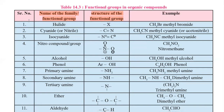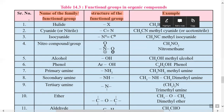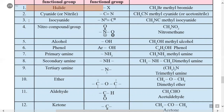The first type is halide. The functional group is dash X, where X is the halogen — it may be chlorine, bromine, iodine, or fluorine. Chlorine is called chloride, similarly bromide and iodide. Example: CH3Br — CH3 is methyl and Br is the bromide functional group, hence the name methyl bromide.